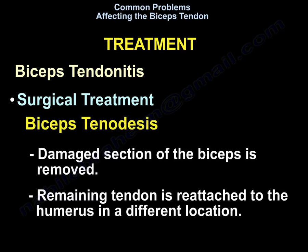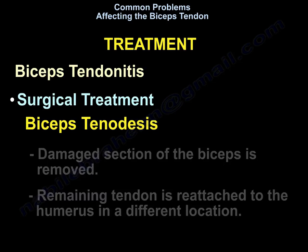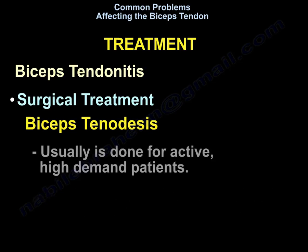Another technique to deal with biceps tendonitis is biceps tenodesis. The damaged part of the biceps is removed and the remaining tendon is reattached to the humerus in a different location. It is usually done for active, high-demand patients.